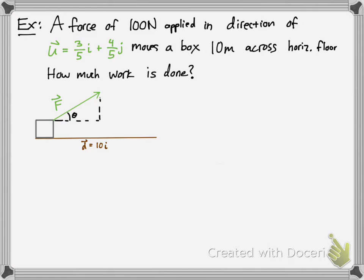Now let's do the physics application. We have a force of 100 newtons applied in the direction of the u vector, and it moves the box 10 meters across the horizontal floor. How much work is done? The force is going to be represented as a vector, so we have the direction, which is the u, and the magnitude is 100.